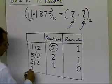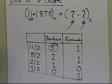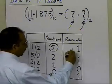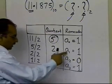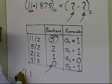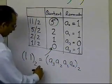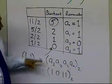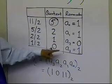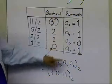Now I take the quotient 1, divide by 2, and I get quotient 0 and remainder 1. As soon as the quotient becomes 0, I stop the whole process. The remainders are labeled a0 (first step), a1 (second step), a2 (third step), and a3 (fourth step). The equivalent of 11 in base 2 is written as a3, a2, a1, a0 — that is, you go backwards. So the result is 1011 in base 2.